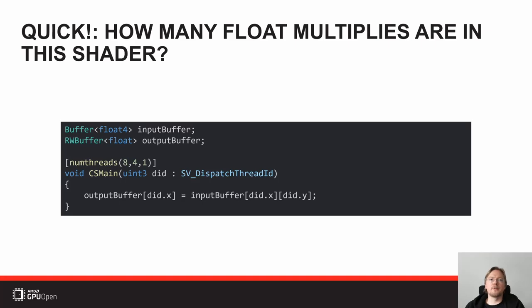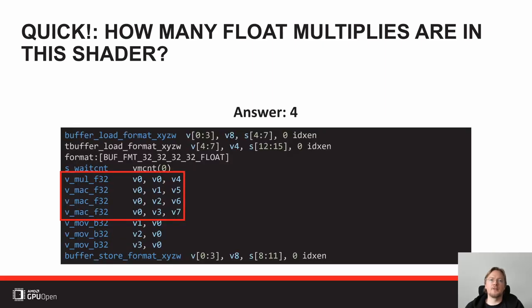Before we get started, I have a small quiz for you. In this code here, how many floating-point multipliers do you see? I'll give you a few seconds to think about it. The answer is four — there are four floating-point multipliers in this code, and if you are as surprised as I am, then it's high time we take a look at how this actually happened.